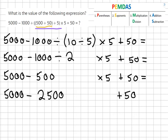And now we can move on to the addition and subtraction again going from left to right. So 5,000 minus 2,500 equals 2,500 plus 50.